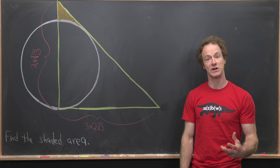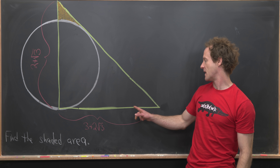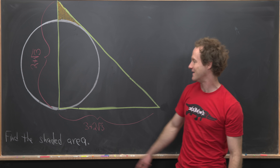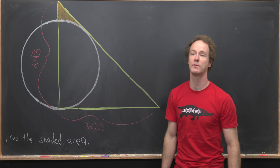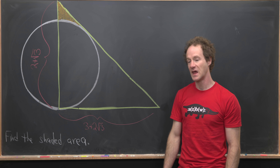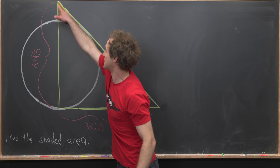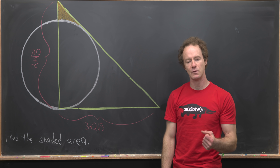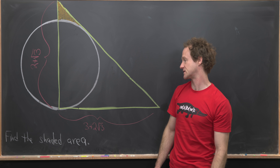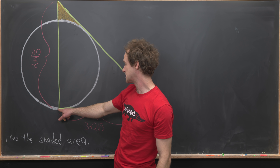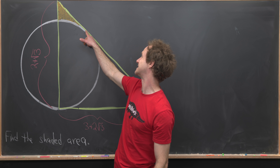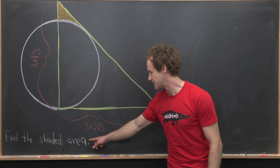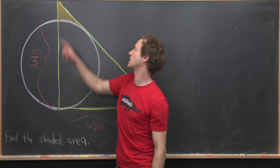Here we've got a nice geometry problem. We're going to start with a right triangle whose base has length 3 plus 2 times the square root of 3, and the height is 2 plus the square root of 3. The altitude of the right triangle goes through the center of a circle, and the radius is chosen so that the circle passes through the right vertex of the triangle and is tangent to the hypotenuse. Our goal is to find the shaded area shown in orange.